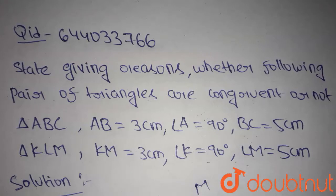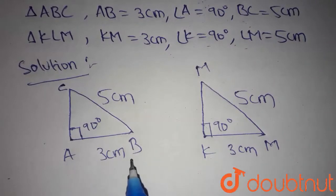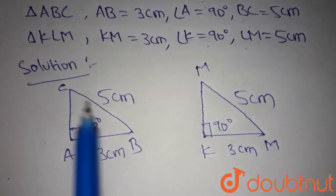Let's get into the solution. I have drawn the triangles beforehand. AB is 3 cm, angle K is 90 degrees and BC is 5 cm.